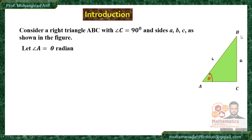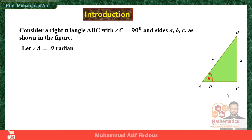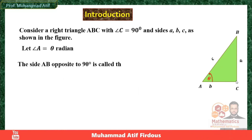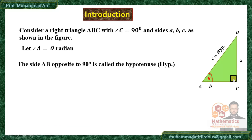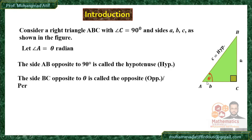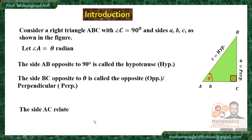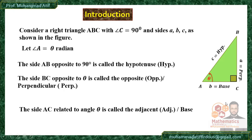Opposite to vertex A we have side small a, and opposite to vertex B we have side small b. The side opposite to the 90 degree angle is called the hypotenuse. The side BC, opposite to the given angle theta, is called the perpendicular. The remaining side AC is called the adjacent or base of this right angle triangle.